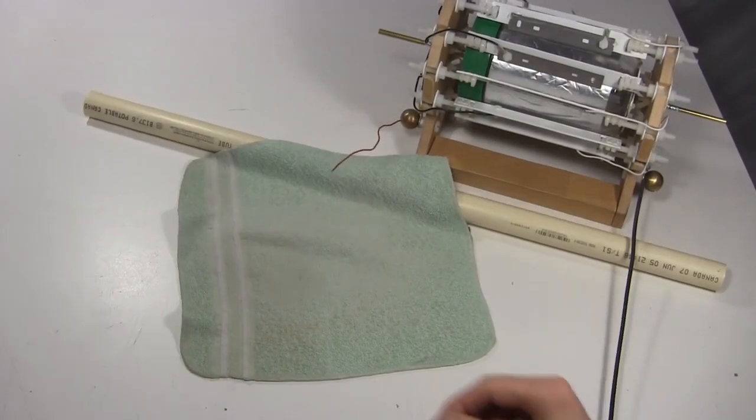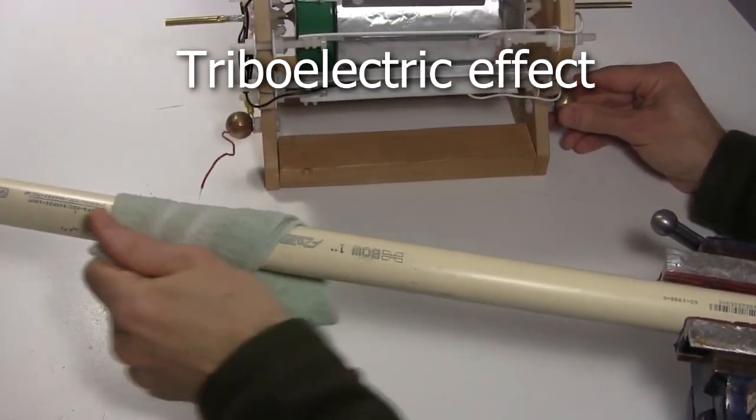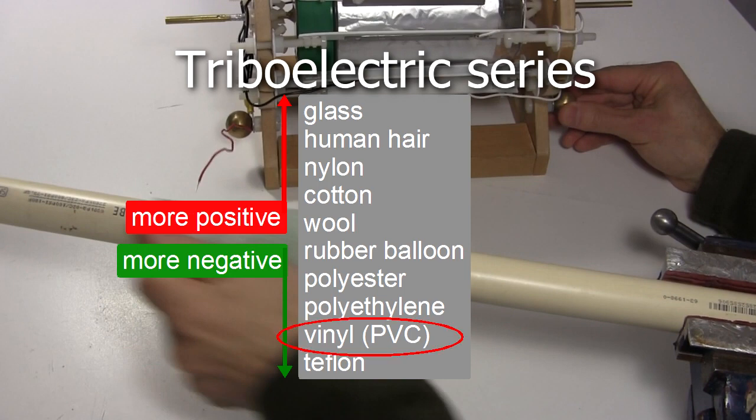To rub the pipes I'm using a cotton face cloth. The effect taking place here is called the triboelectric effect. To choose your materials look up a table called the triboelectric series. Choose materials for the pipe and cloth that are as far apart in the series as possible. As I said I'm using a PVC pipe, the V stands for vinyl, which is down here. And a cotton cloth, which is up here.